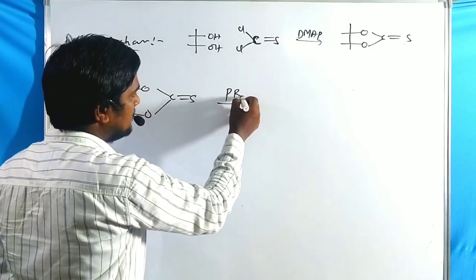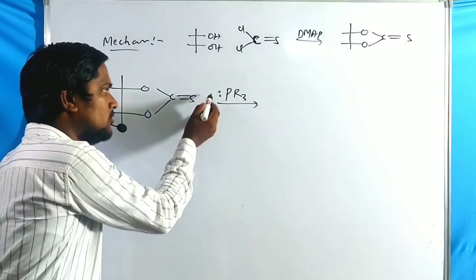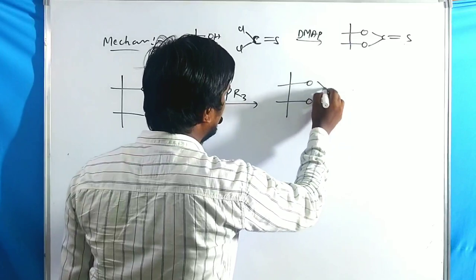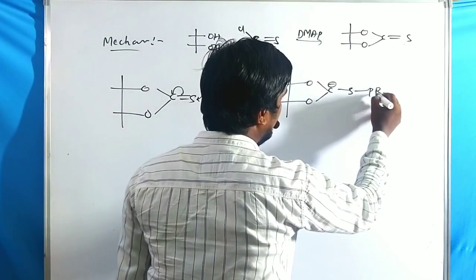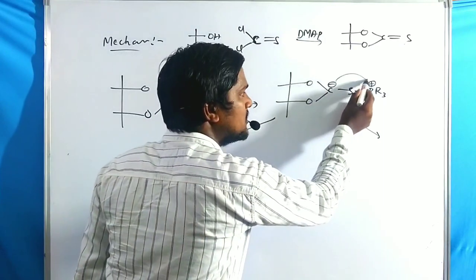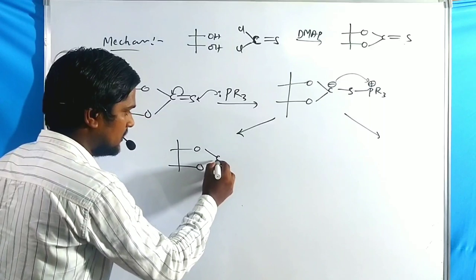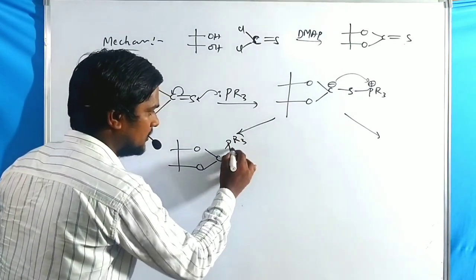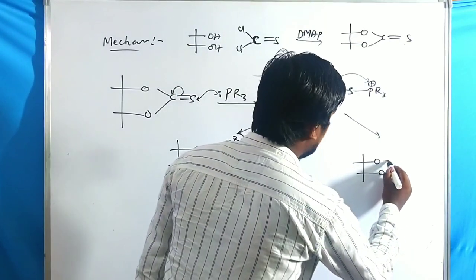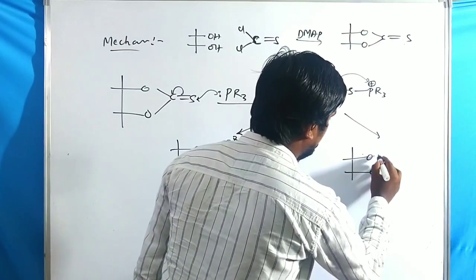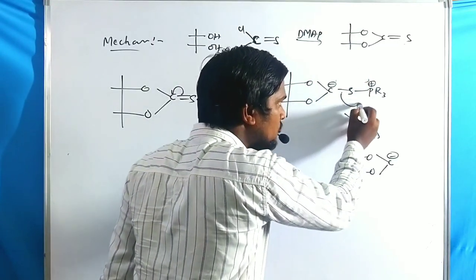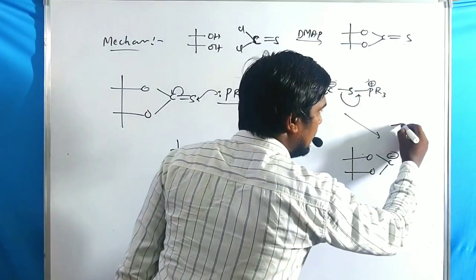When the cyclic thionocarbonate is treated with PR3, the lone pair of electrons on phosphorus attacks the electrophilic sulfur center. This creates a carbanion: the carbon bearing a negative charge, with sulfur bonded to PR3 carrying a positive charge. The negative charge on the carbanion can attack the phosphorus atom, forming an O-C-C-S linkage.